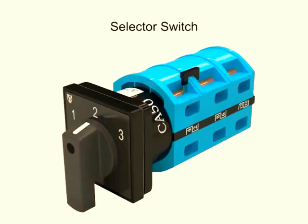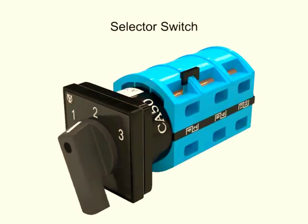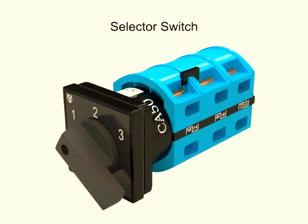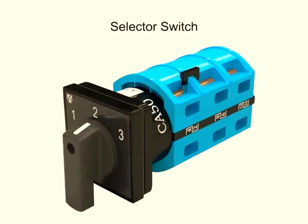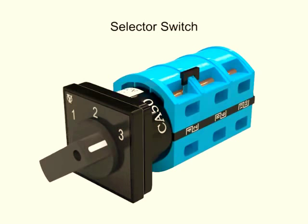A selector switch is a device with an operator that is manually rotated to activate electrical contacts. They are normally used to select either two or three different circuit conditions.